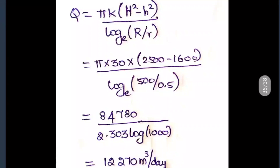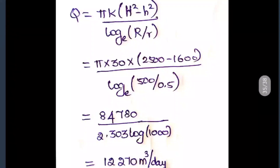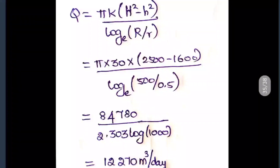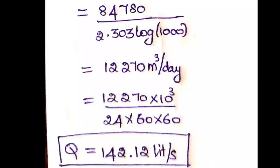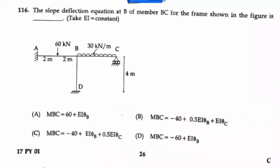The formula is: Q = πk(H² − h²) / ln(R/r). Substituting: k = 30, H² = 2500, h² = 1600, R/r = 500/0.5 = 1000. Converting ln(1000) = 2.303 × log₁₀(1000) = 2.303 × 3. Calculating gives Q ≈ 1270 m³/day. Converting to liters per second (÷ 24 × 3600) gives approximately 142.12 L/s, so option B is the right answer.